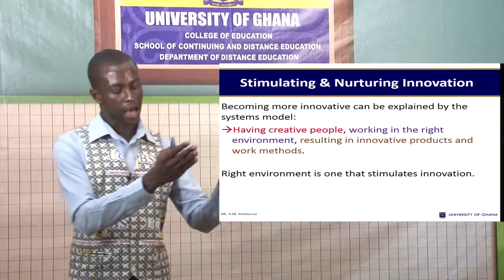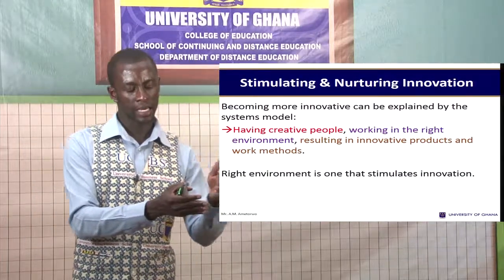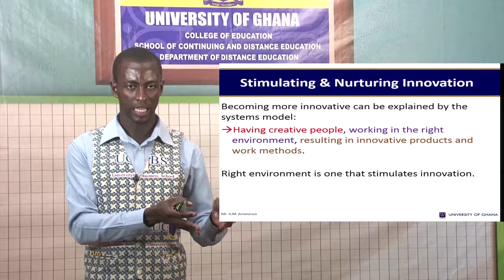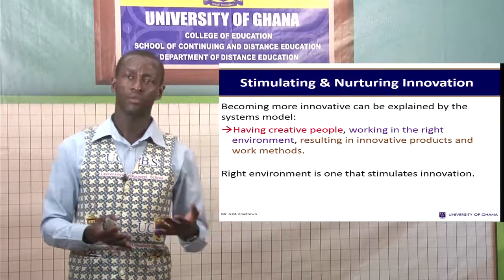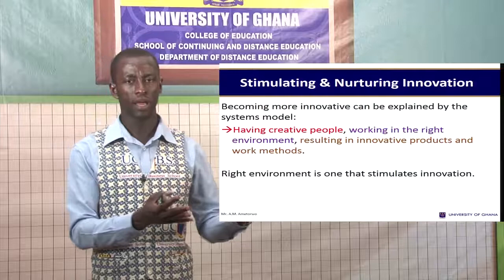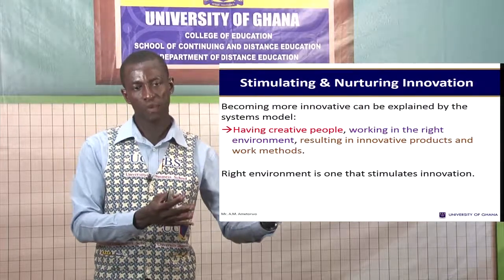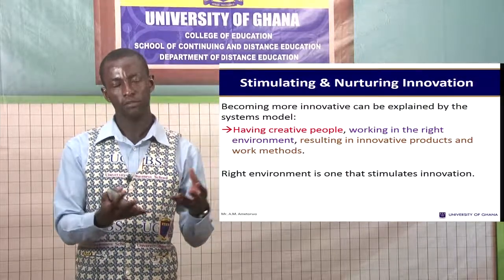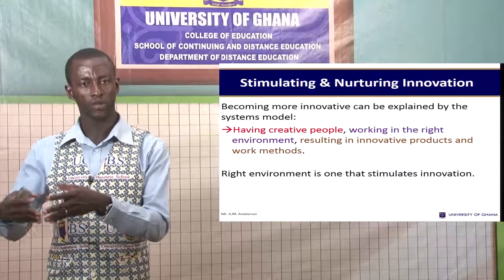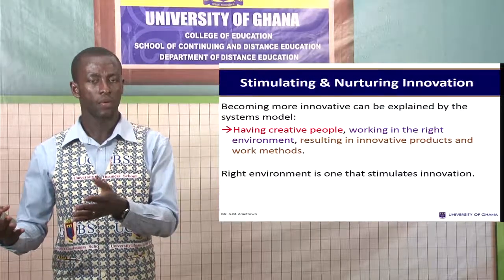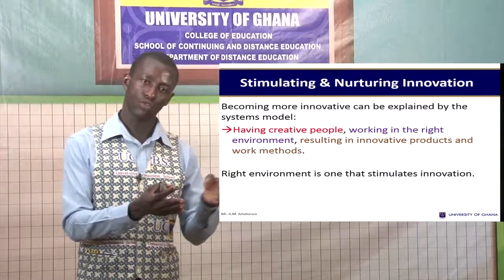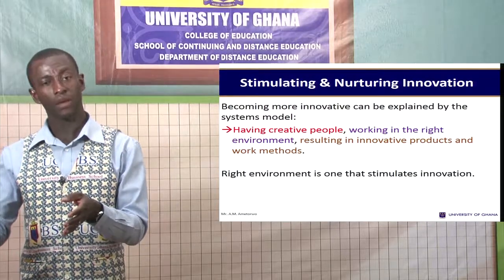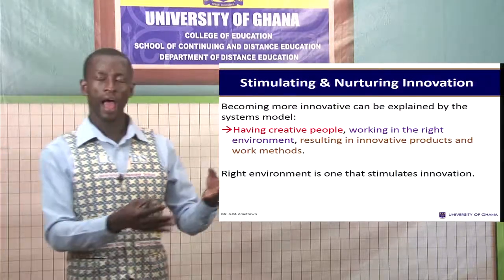In this systems model of how to nurture innovation, we talk about having creative people. At the beginning, we want to bring in organizational members or candidates who have creative ideas. In order to know how people are creative, usually through the interview and other selection methods, we are able to screen and identify those who have very good creative ideas that are consistent with the vision or purpose of the organization. So we have such creative people in the organization.